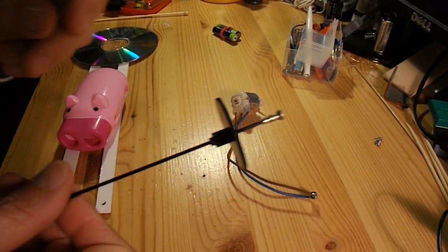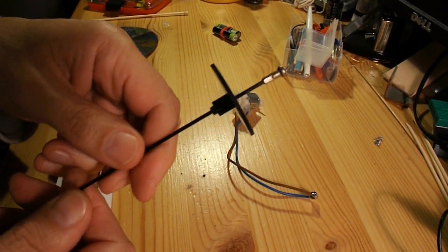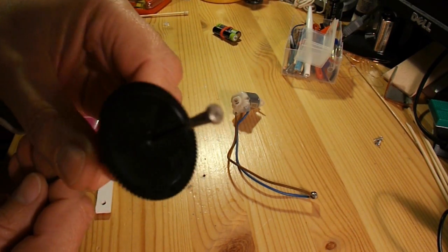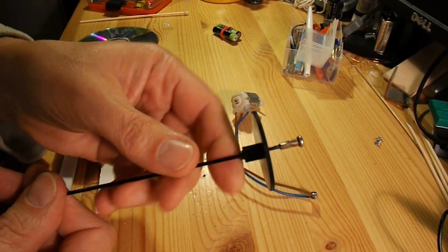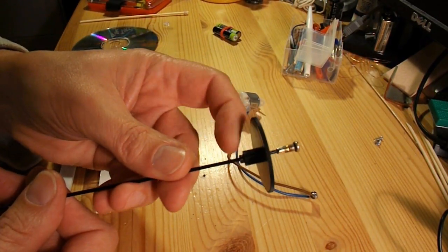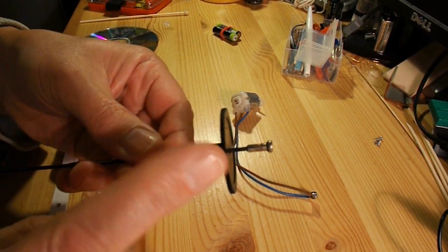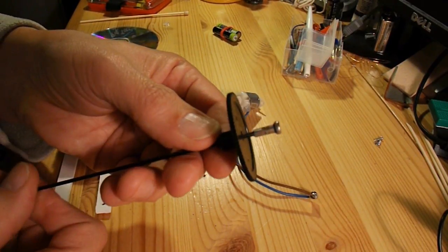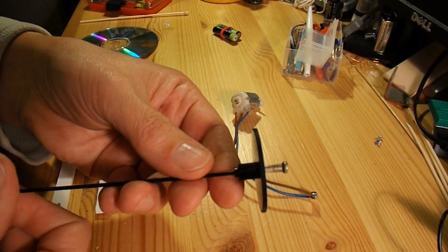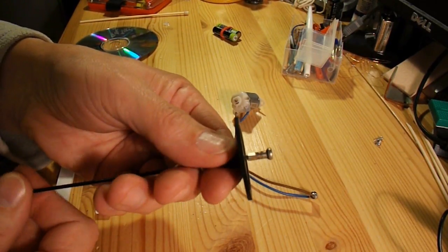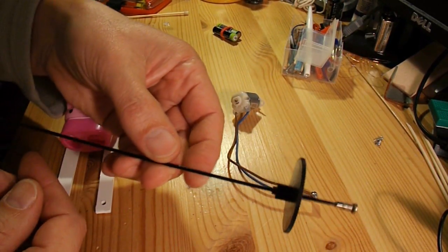Alright, had a good rummage through my scrap box. I've got an old bicycle spoke here. That's just about the right thickness. Again I'm going to have to put a bit of hot glue on it or something to make it grip and then figure out how I'm going to attach some wheels.